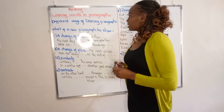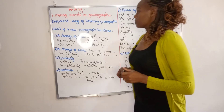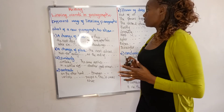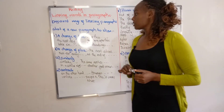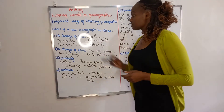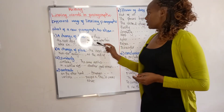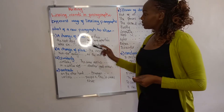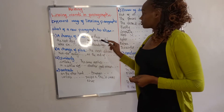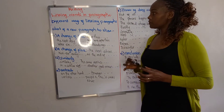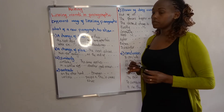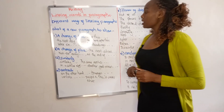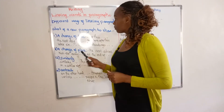Now let us look at how to link paragraphs in different ways. When we want to show a change of time, we use linking words like 'after this,' 'the next day,' 'not long after this,' 'later on,' 'a decade ago.' These linking words are expressions of time, and when we want to show a change of time at the start of a new paragraph, we use these linking words, among many more.